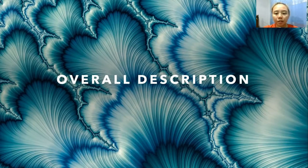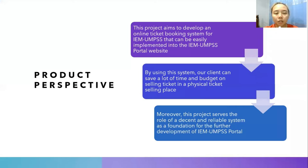My name is Izurin and my metric number is 65931. I will present the next slide, which covers the product perspective, product functionality, and user end characteristics for the IEM-UMPSS portal system. The product perspective of this system is to develop an online ticket booking system for IEM-UMP students, where the client can optimize their time and budget when selling tickets. This project serves as a decent and reliable system as a foundation for further development of the IEM-UMPSS student section portal.